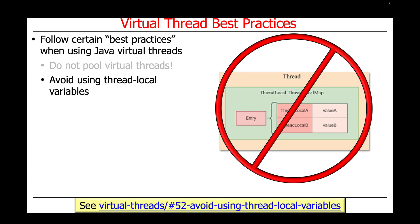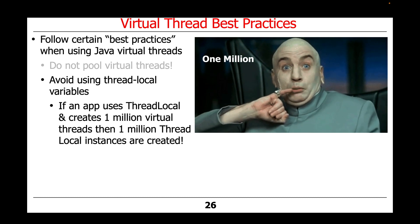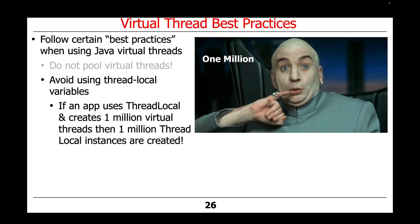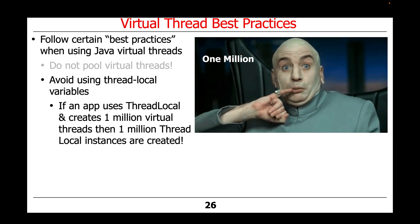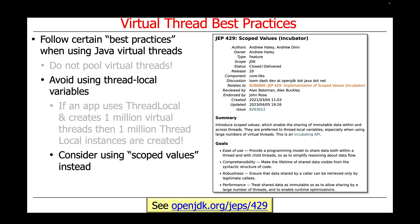Likewise, you should avoid using thread local variables with virtual threads. In particular, if an app uses thread local and creates one million virtual threads, then one million thread local instances are also created, which can be prohibitively expensive and unnecessary — especially when you consider the new scoped values feature added to Java recently, which enables sharing of immutable data within and across threads. Scoped values are preferred over thread local variables, especially when you have large numbers of virtual threads.